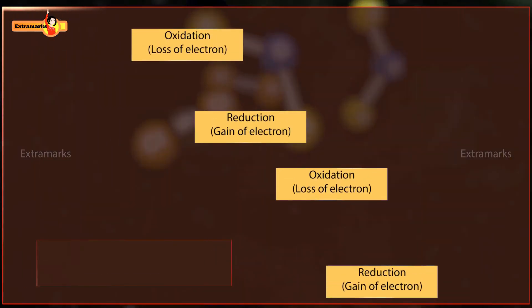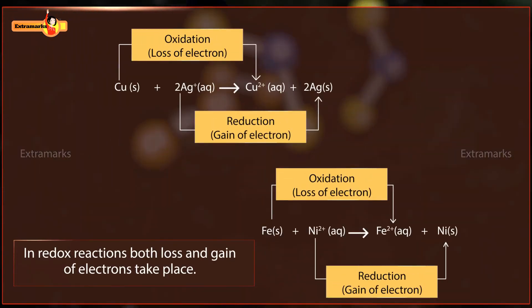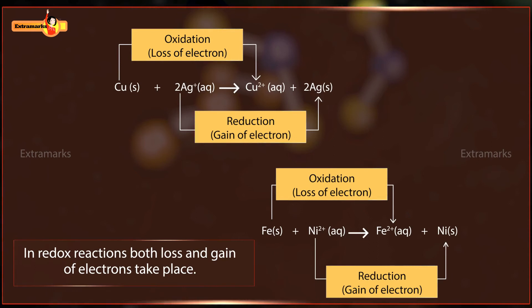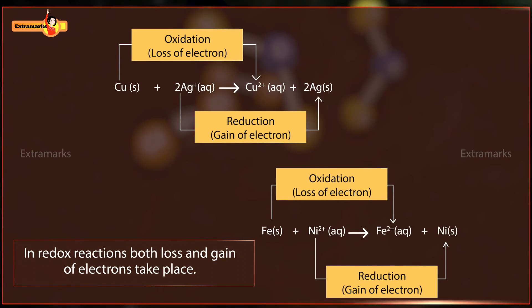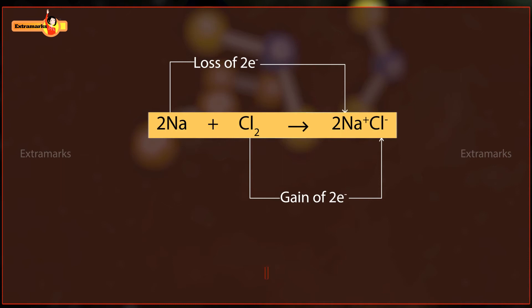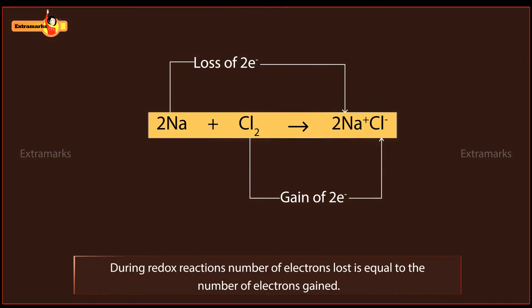Since a redox reaction involves both oxidation and reduction, in redox reactions both loss and gain of electrons take place. Here are some examples of the same. Remember, during redox reactions, the number of electrons lost is equal to the number of electrons gained.